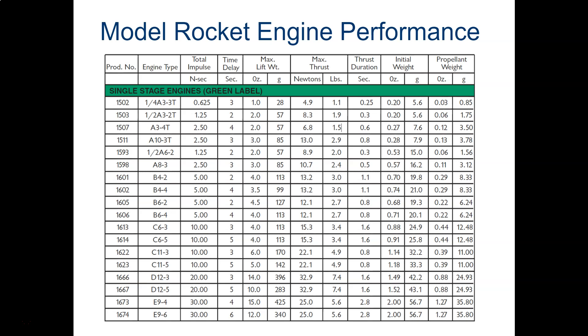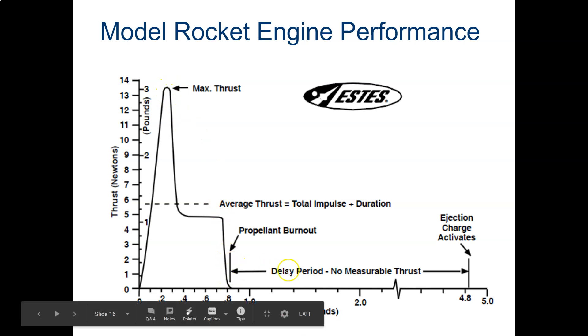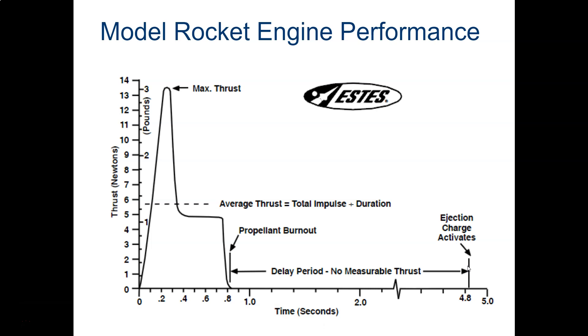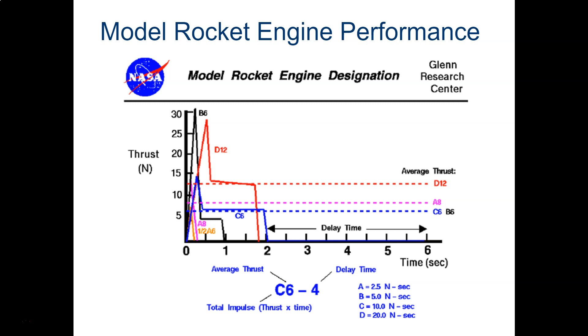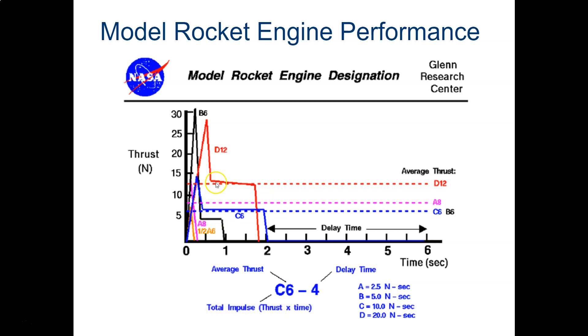Here's an actual thrust curve from Estes. I'm not sure which engine this is, it's got a max thrust of 13, so this looks like it might be a B, maybe a C engine. But it'll give you the max thrust and where the propellant burns out, this delay period here—it's still burning but here's where the ejection charge comes out. We're going to take a look at some of those and analyze those in an upcoming assignment. Just another look, I put this in here for a comparison so you can see what an A size motor looks like, a B and a C motor. One interesting thing is the B6 motor has a higher thrust than a D, but one thing also to notice is that the D thrust curve and the area under that, the impulse, is much more.